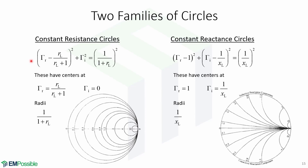With these two expressions, we notice that we have two families of circles. The first family is the constant resistance circles given by the real part. The circles have centers at gamma R equals RL over (RL plus 1) and gamma I equals 0. The radius is given by 1 over (1 plus RL), and the circles look like this.